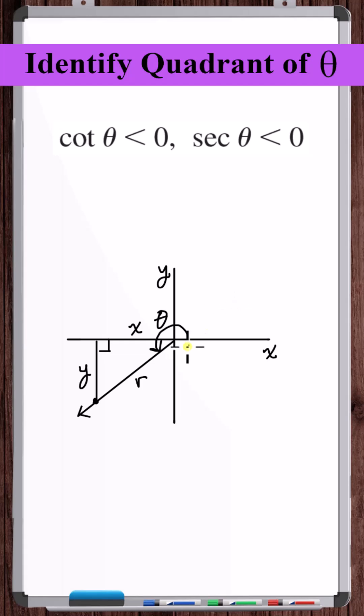So when is cotangent negative? Cotangent is adjacent over opposite. Cotangent is negative in the second and fourth quadrants.